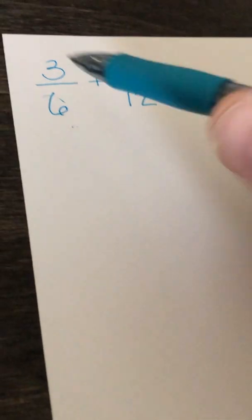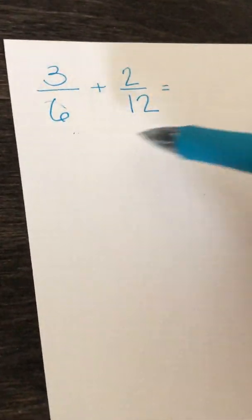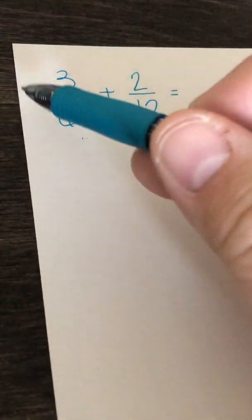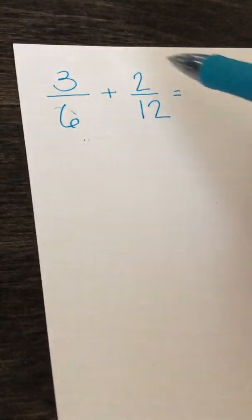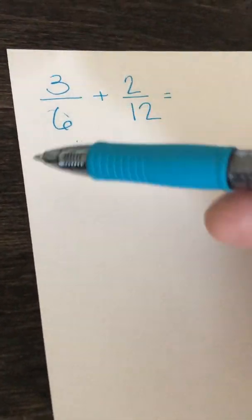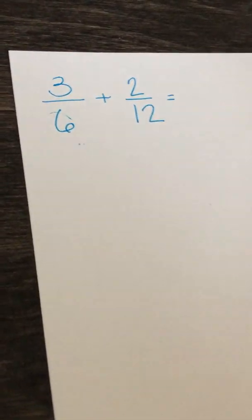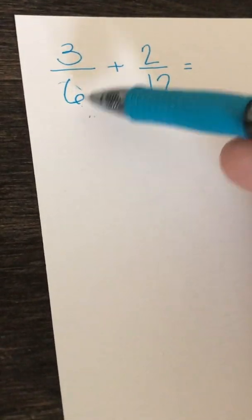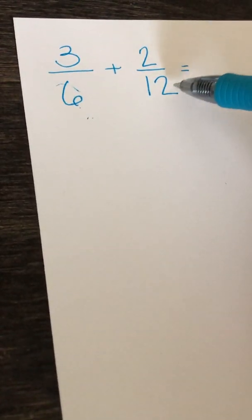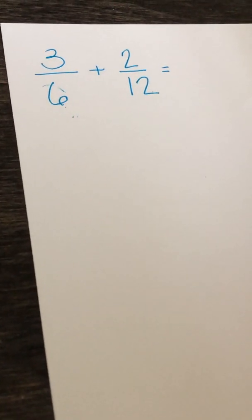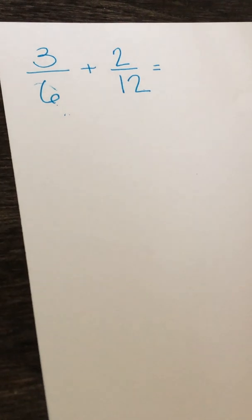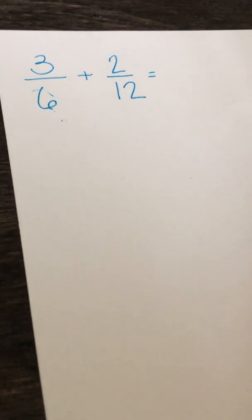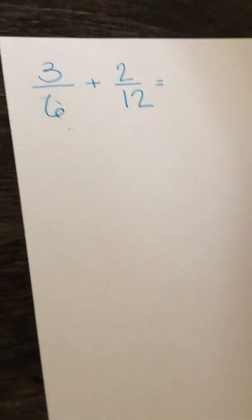The first step is to look at the problem and to make sure that the denominators are not the same. And sure enough, this is a 6, this is a 12. We cannot add that because the denominators are not the same.